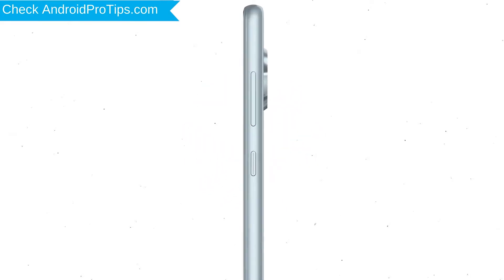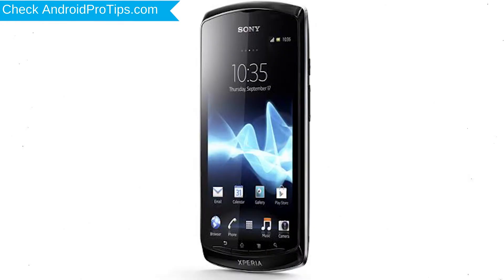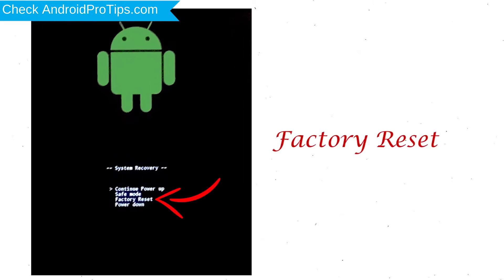Power off your mobile by holding the Power Button. Next, press and hold Volume Down Button and Power Button. When you see the Recovery Mode screen, release all the buttons. Select Factory Reset.